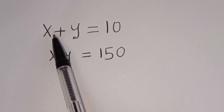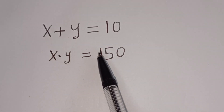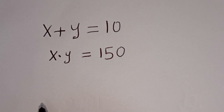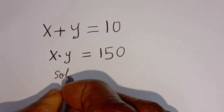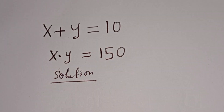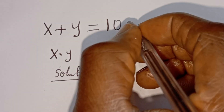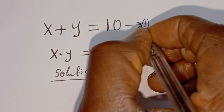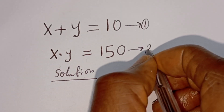Hello, how to solve this simultaneous problem? X plus Y is equal to 10, and X times Y is equal to 150. Solution.